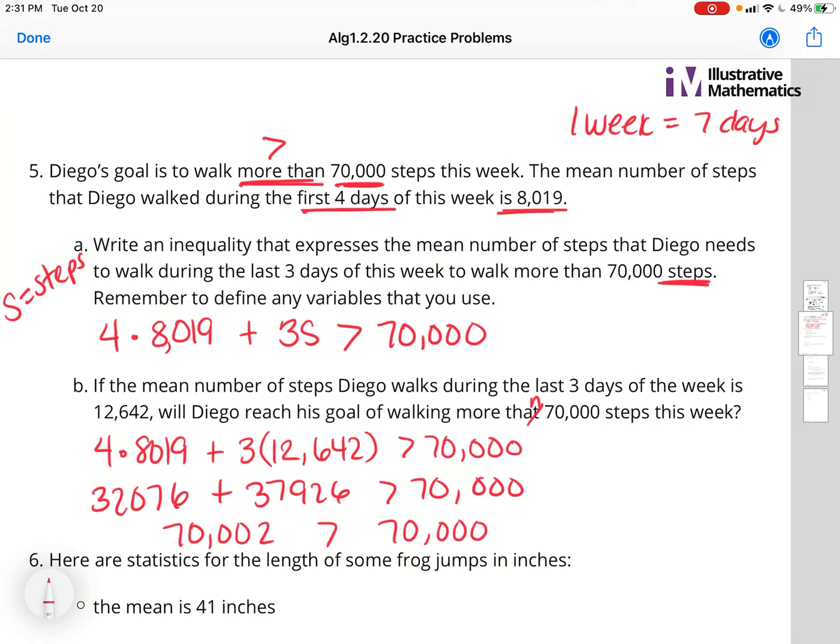So part A says write an inequality that expresses the mean number of steps that Diego needs to walk during the last 3 days of his week to walk more than 70,000 steps. So we have the first 4 days times 8,019 because he walked about 8,019 steps per day. He has to walk 3 more days. And we use the letter S to represent the number of steps. We don't know the number of steps yet. But we do know he wants to walk more than 70,000 steps. So that is our inequality. I just took what we had from the paragraph and put it into an expression.